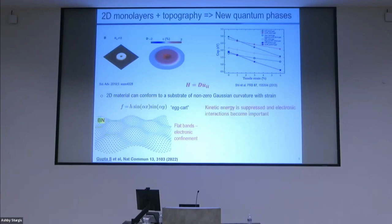Again, the kinetic energy will be suppressed and electronic interactions will become important. This sort of idea is very general and will be applicable to any 2D semiconductor and can be used to realize electronic flat bands. I'll be showing you an example with boron nitride. Boron nitride is a bit special if we're designing topography and realizing interesting states.